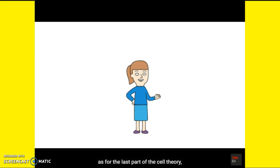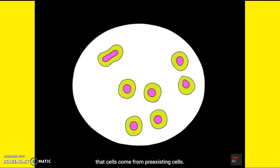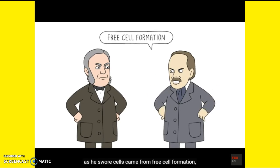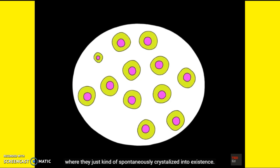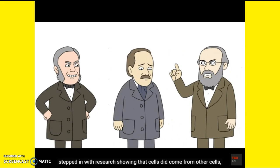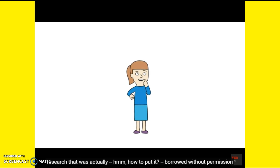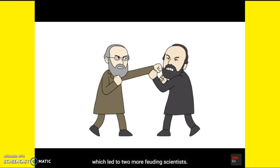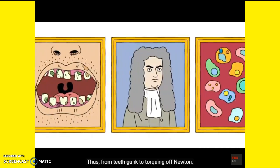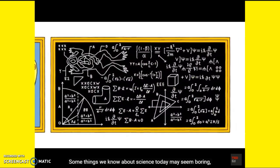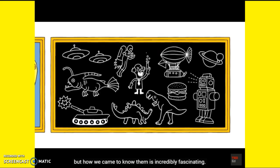A bone of contention arose between them regarding the last part of the cell theory — that cells come from pre-existing cells. Schleiden didn't exactly subscribe to that thought, as he believed cells came from free cell formation where they just kind of spontaneously crystallized into existence. That's when another scientist named Rudolf Virchow stepped in with research showing that cells did come from other cells — research that was actually borrowed without permission from a Jewish scientist by the name of Robert Remak, which led to two more feuding scientists. Thus, from teeth gunk to torquing off Newton, crystallization to swamp cells, the cell theory came to be an important part of biology today. Some things we know about science may seem boring, but how we came to know them is incredibly fascinating.